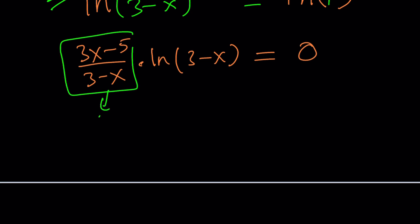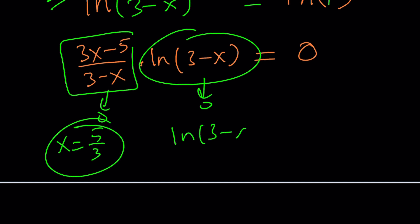Either this can be 0, or this can be 0. This means x is equal to 5 thirds, which we already talked about. If ln 3 minus x is 0, that means ln 3 minus x is ln 1, which means 3 minus x equals 1, which means x equals 2. And again, we found those before.